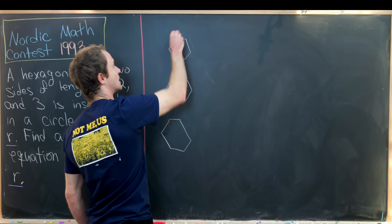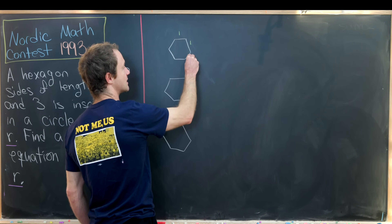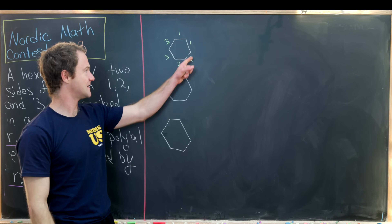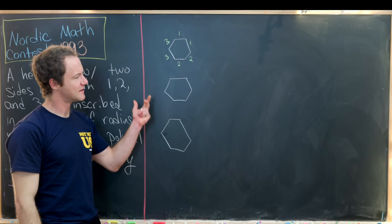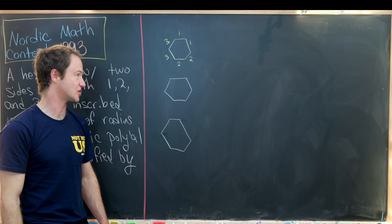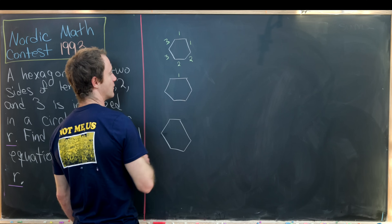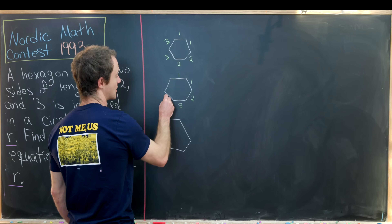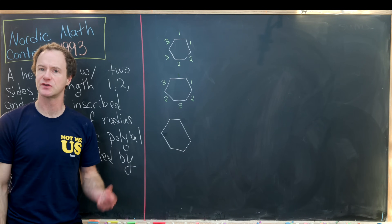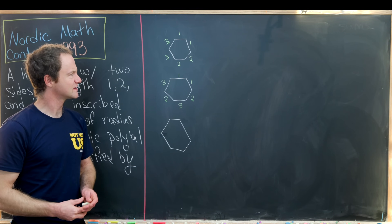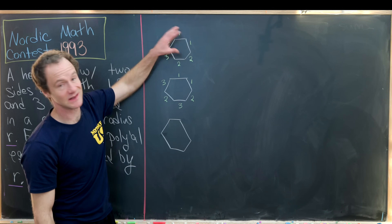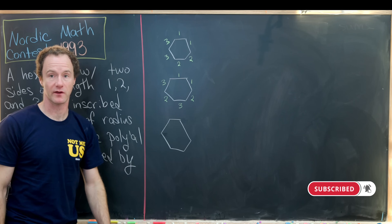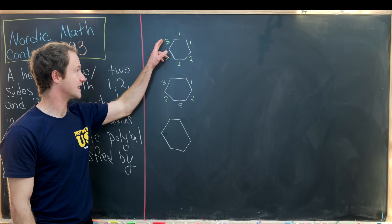The first hexagon has side lengths one, one, two, two, three, three — where the like sides are all next to each other. So the side with length one is next to the other side of length one, two is next to two, and three is next to three. The second configuration has the two sides of length one adjacent to each other, and then it alternates two, three, two, three.